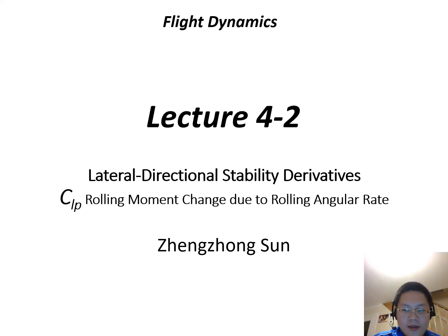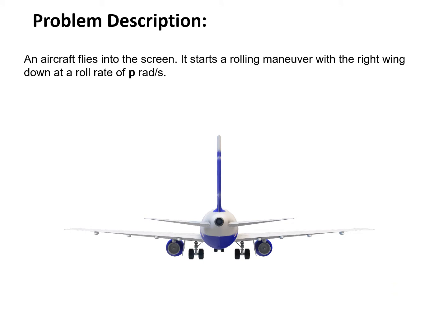So in this mini lecture, we will continue with the lateral directional stability derivative which is CLP. The physical meaning of CLP is the rolling moment change due to the rolling angular rate. Before we do the derivation of CLP, let's first define this problem.